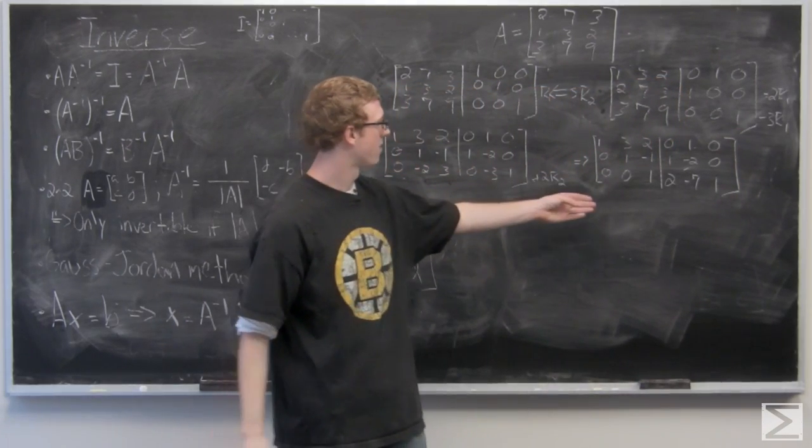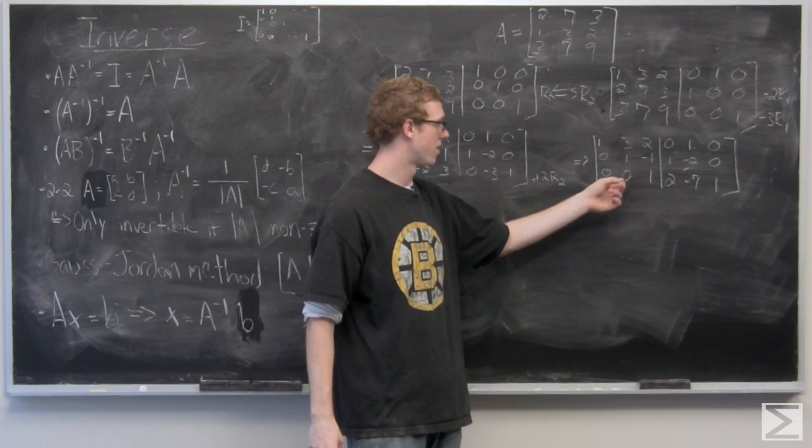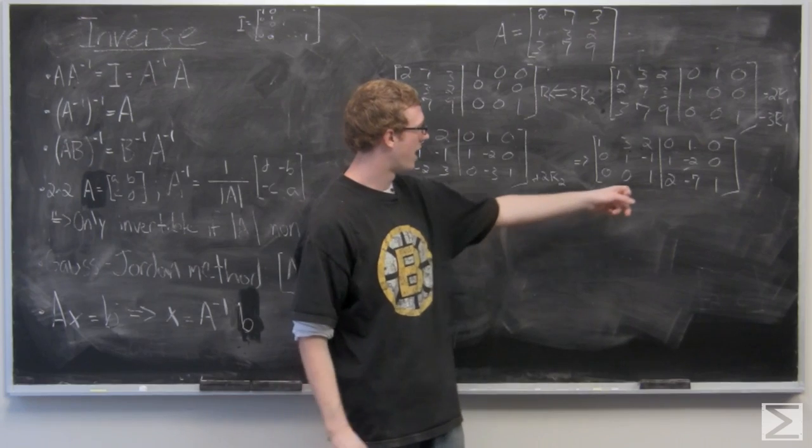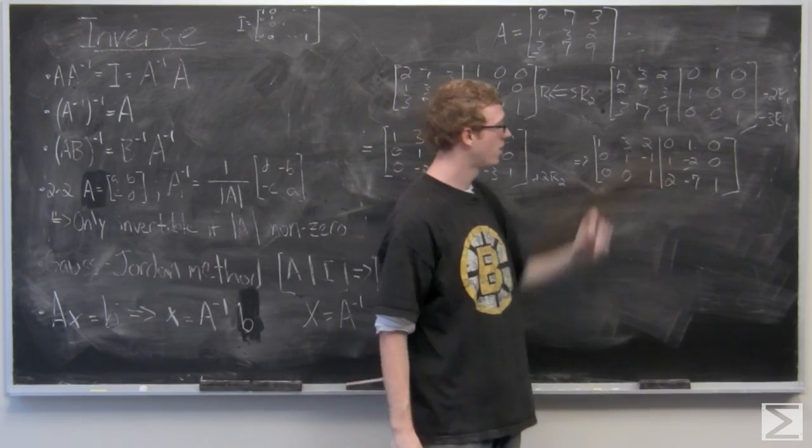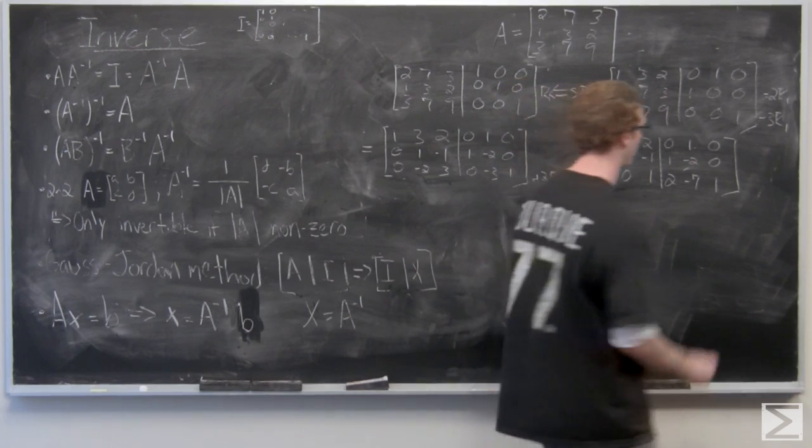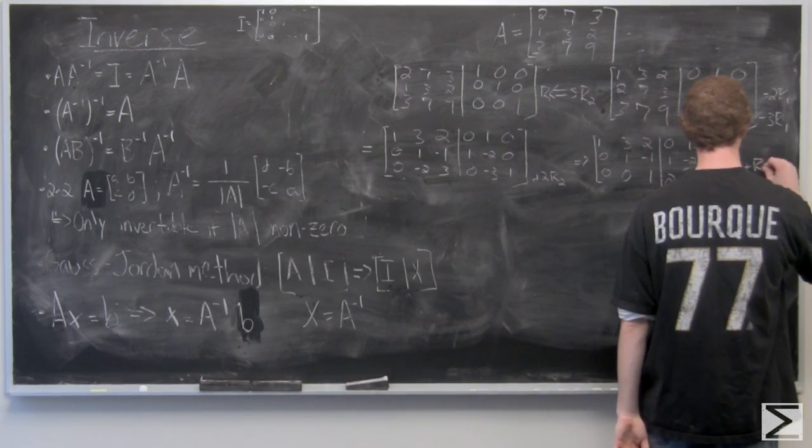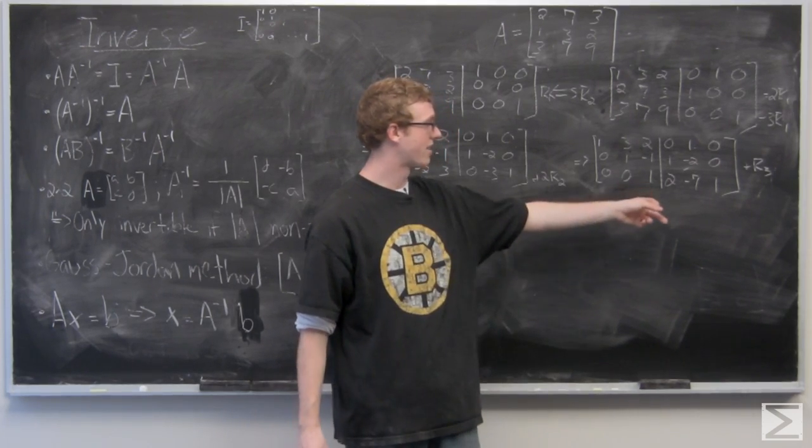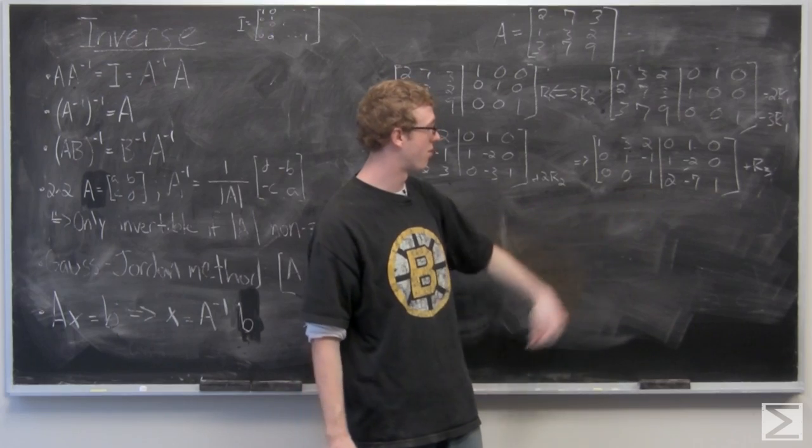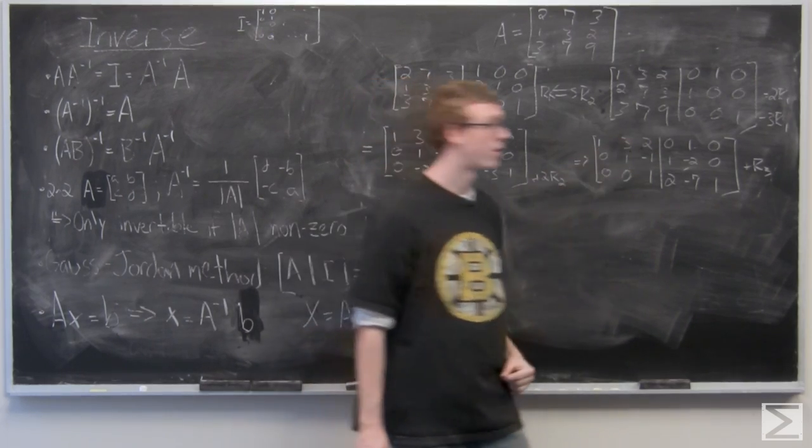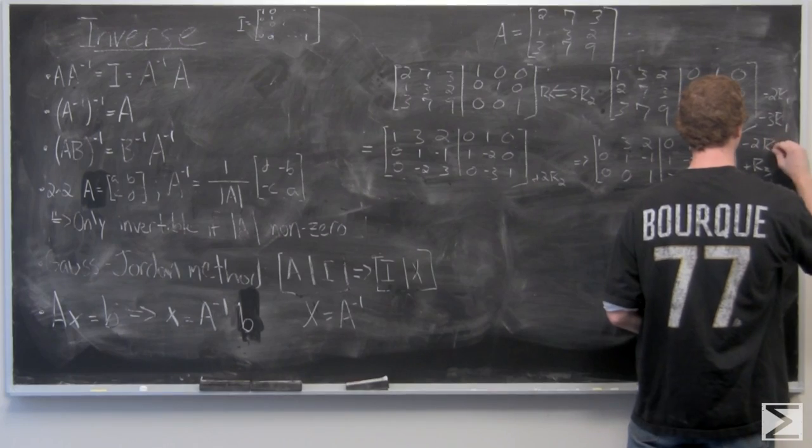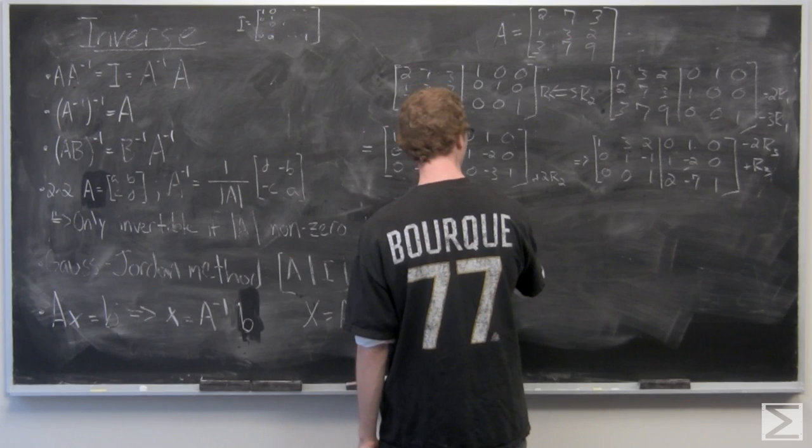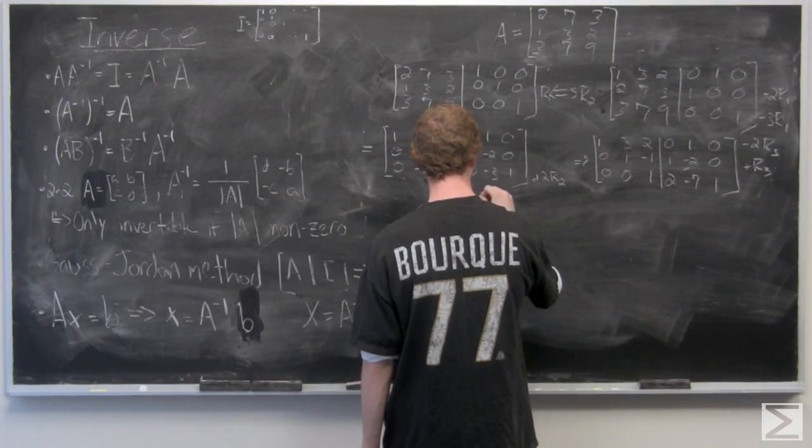So now we have upper triangular matrix here on the left. Now we want to work towards getting rid of this three, two, and negative one. First we're going to add our three to our two. That way we can get rid of that negative one. And we can also, in this same step, subtract three, excuse me, two of our three from our R1.